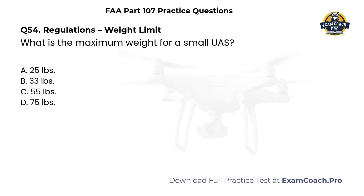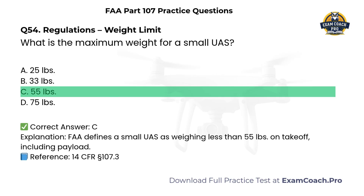Regulations — Weight Limit. What is the maximum weight for a small UAS? A. 25 pounds. B. 33 pounds. C. 55 pounds. D. 75 pounds. Correct answer: C. 55 pounds. The FAA defines a small UAS as weighing less than 55 pounds on takeoff, including payload.